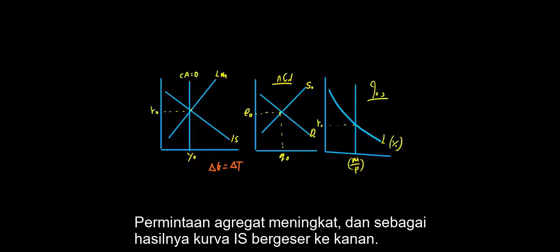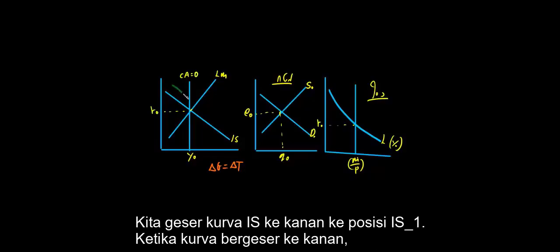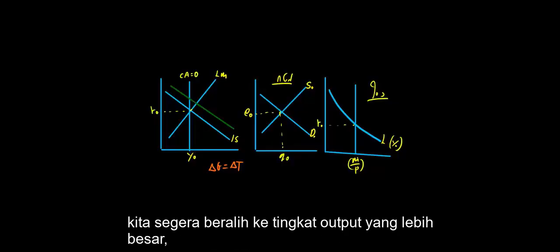the IS curve shifts to the right. When this curve shifts to the right, we move in the immediate stage to a greater level of output, to Y1.